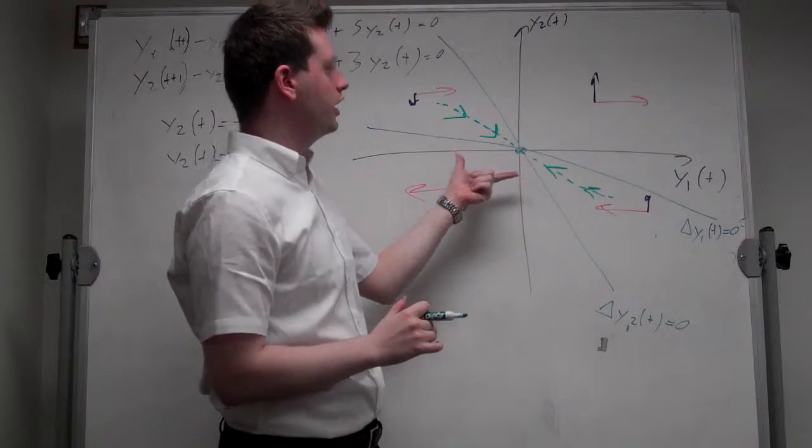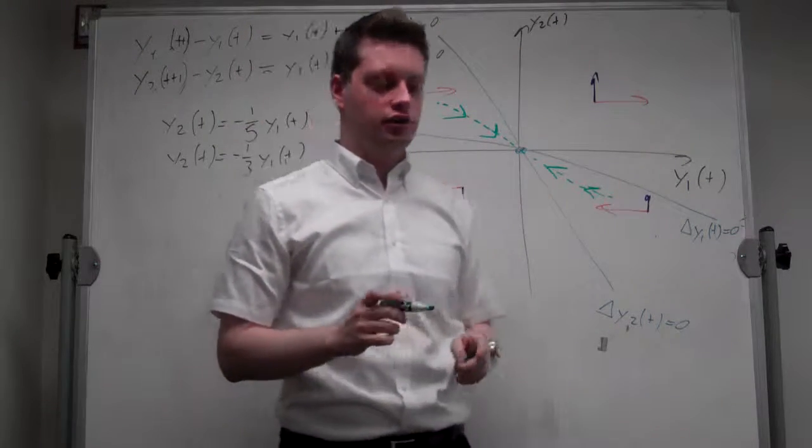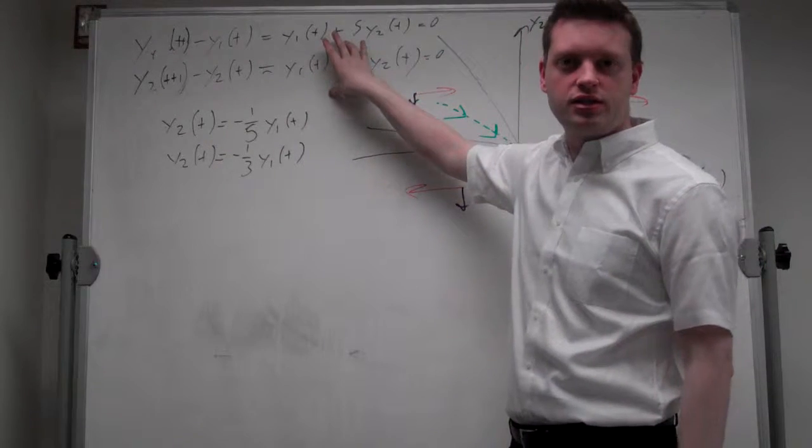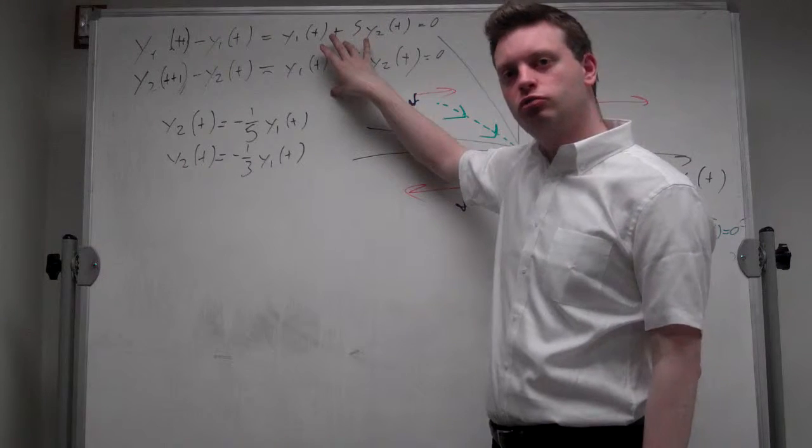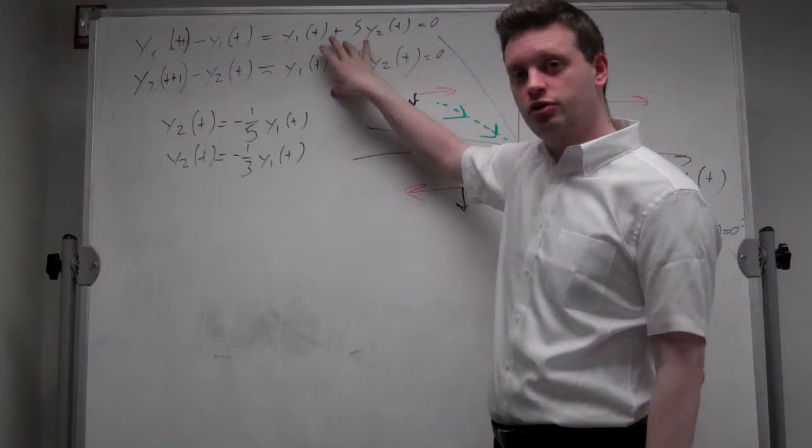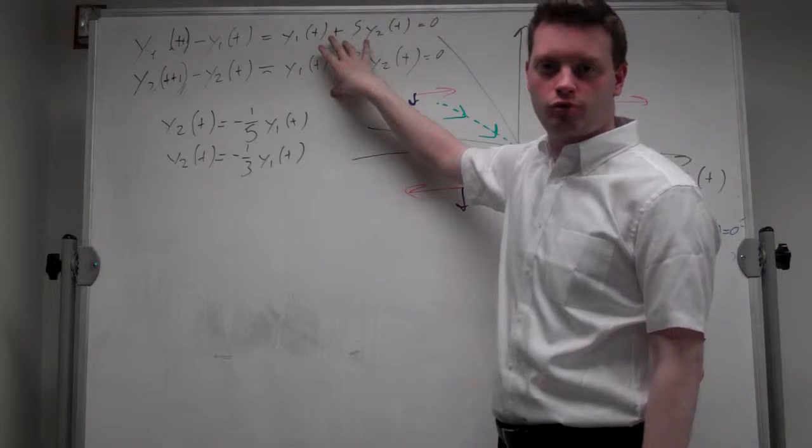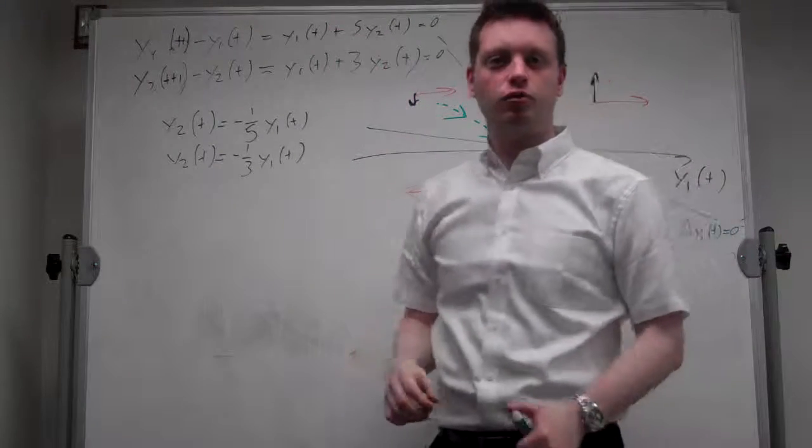And this should give you exactly the same picture as you got from calculating the solution of this system in general, where you found that one eigenvalue was less than one in absolute terms, and the other eigenvalue was more than one in absolute terms. Thank you for watching.